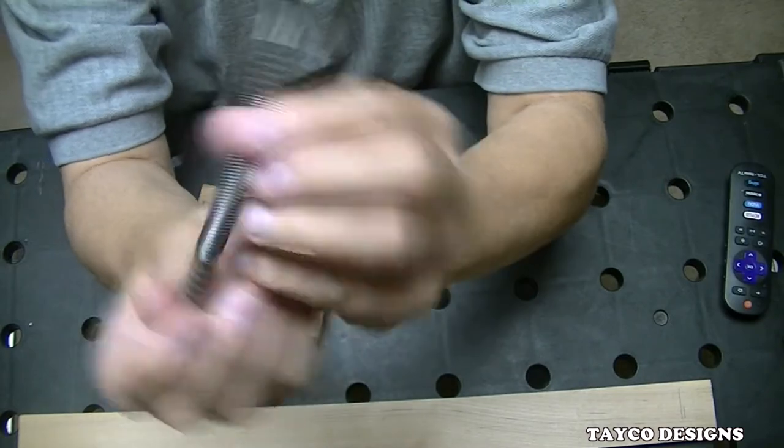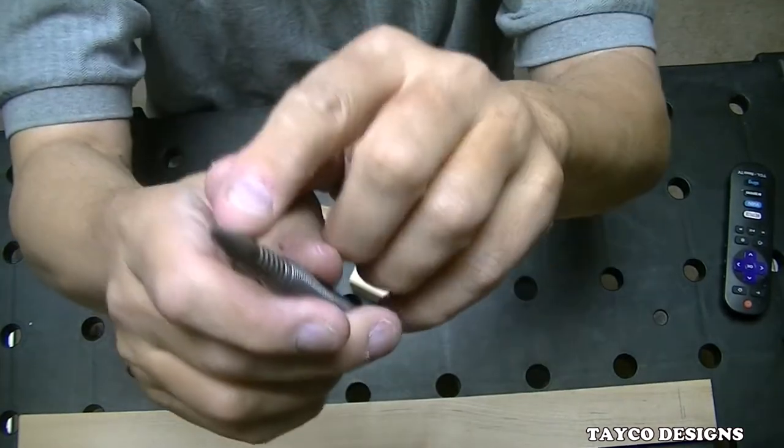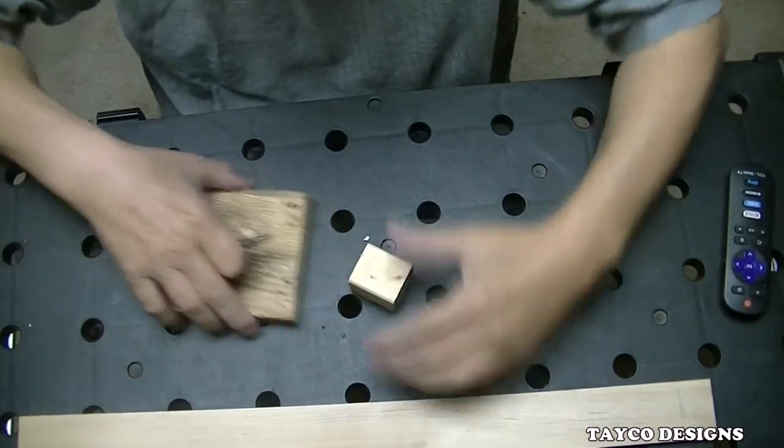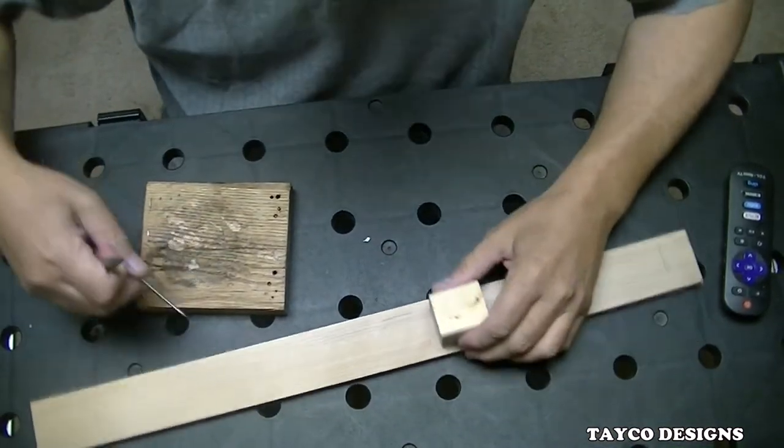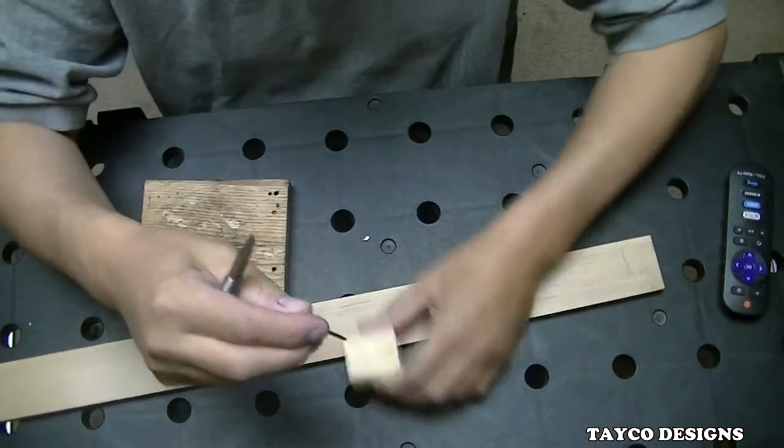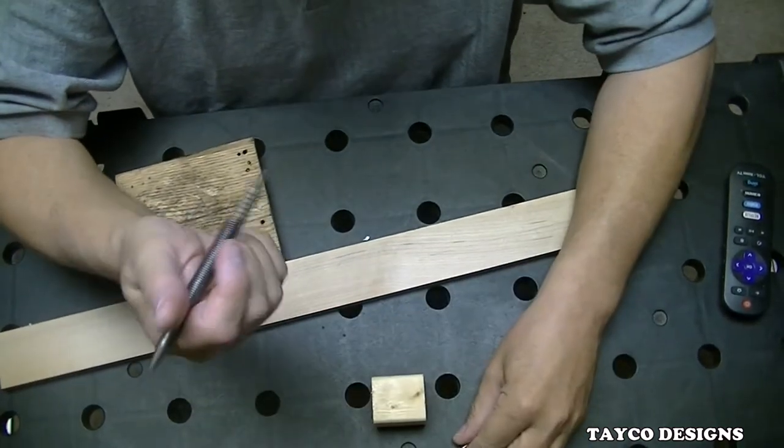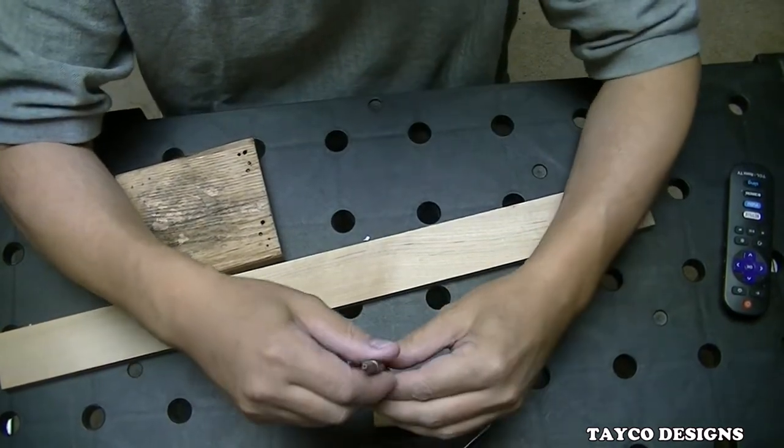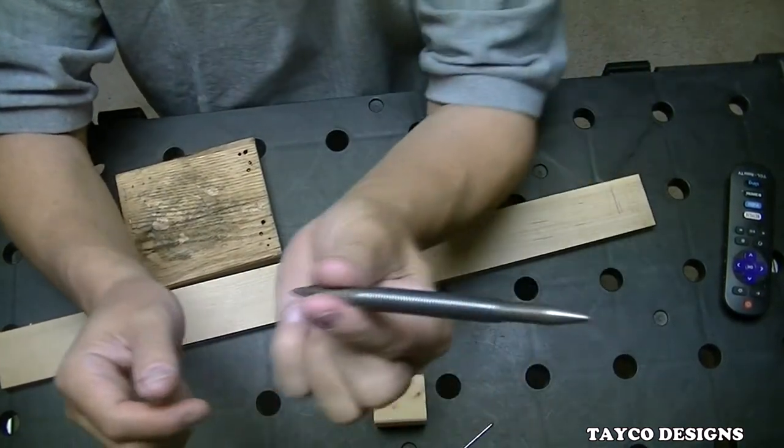Okay, spring punch on one side, nail set on this side. Have a piece of pine here and have a nail, I don't know what size nail this is, but I'm going to use the nail punch to start a hole. What you do is hold it like this and pull this back and let go.